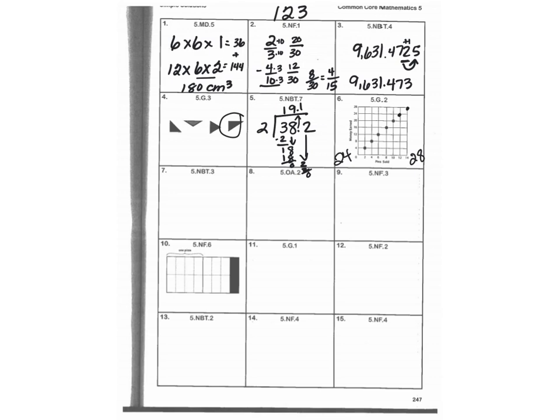For number seven, I am comparing 1.34 to 1.64. I see that they both have a 1. I look to the tenths place, and I know that 3 is less than 6.